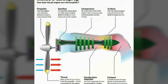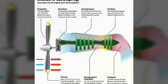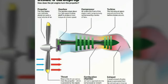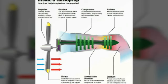There is no need for a thrust reverser in a turboprop engine, because reverse thrust can be produced simply by changing the blade angle of the propeller. You can achieve maximum reverse thrust by changing the blade angle, providing braking action to the aircraft.